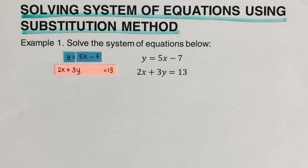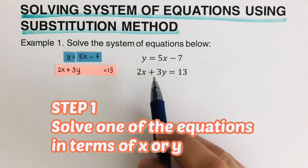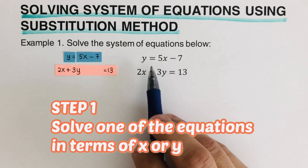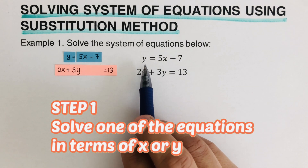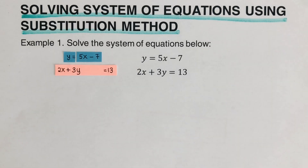Now this is the first step. We are supposed to solve for the equation in terms of x or y. So in this problem, we already have an equation where y is by itself. So we're good on the first step.